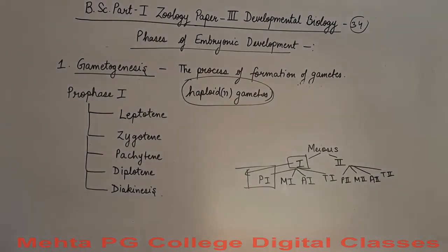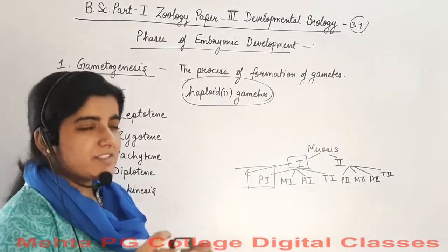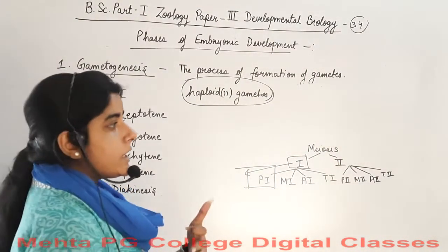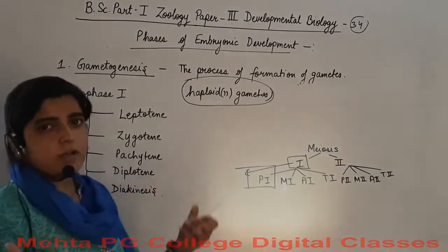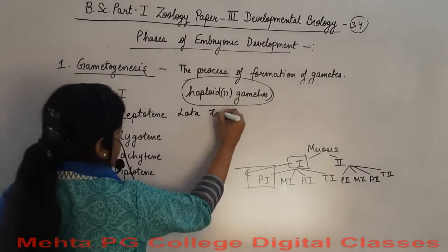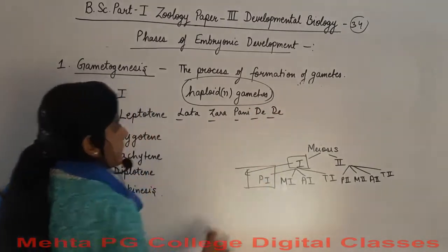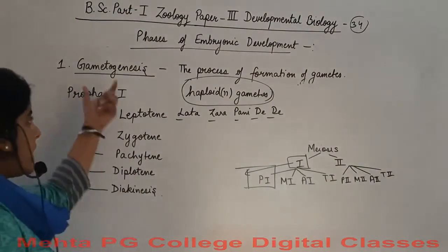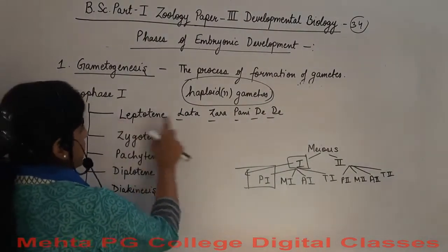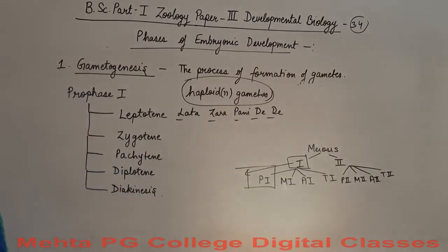When we say prophase first contains five stages, it is not hard to remember. We can remember these by a short trick: 'Leptazera Pani Del' — that is, L, Z, P, D, and again D — to remember the serial order of how events go one by one.